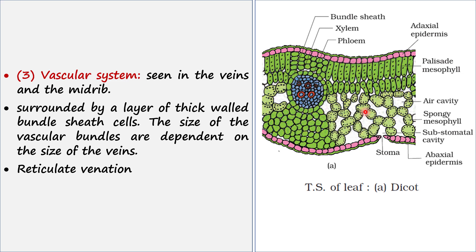Next is the vascular system, which contains xylem and phloem. The vascular system is mainly present in the veins and the midrib of the leaf. Here, xylem and phloem are found and they are surrounded by a thick layer of bundle sheath cells.